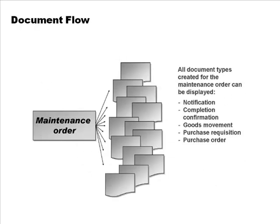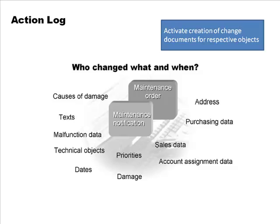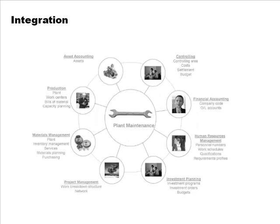This is the document flow for maintenance orders. All the documents created — purchase requisitions, purchase orders, invoices — can all be tracked in one central place, just like document flow for sales orders. There is also something called the action log, which has to be activated and which logs every single action that takes place.